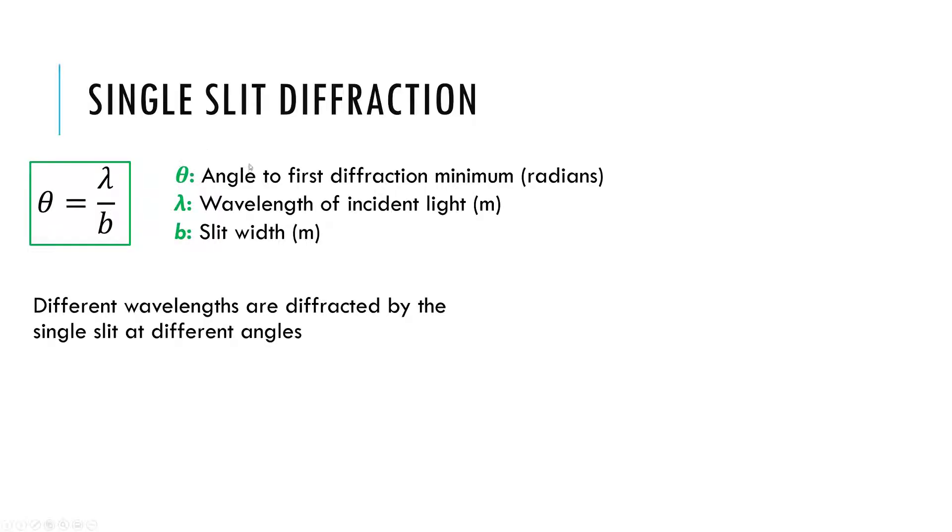So, theta is a very specific angle. It's the angle to the first diffraction minimum, and it's got to be in radians since we're using this small angle approximation. That's the angle to the minimum of a single-slit diffraction in radians. It's a very specific equation.